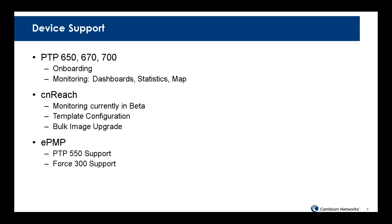CNReach is currently in beta as well. We're going to be adding template configuration and bulk image upgrade into that, then rolling it out as a phase-two CNReach consolidated within the existing CN Maestro. CNReach right now is a separate beta not included within the current CN Maestro on-premises. For EPMP, the PTP 550 and Force 300 support will be added as those products are brought out.